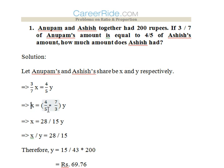So x would be 4/5 into 7/3 y. We get x is equal to 28/15 y. So x to y ratio would be 28 is to 15.